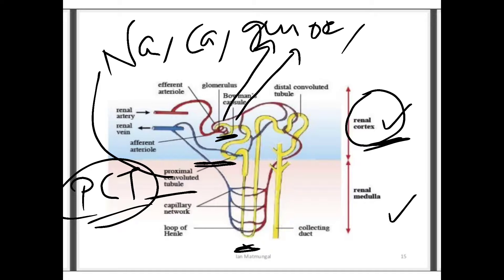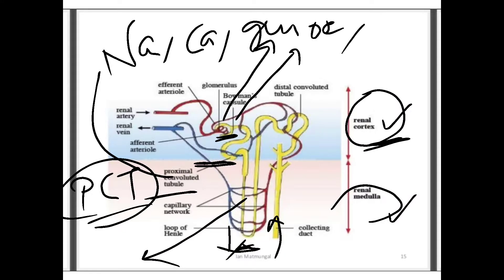The loop of Henle is found in the renal medulla and is formed of two limbs: a descending limb and an ascending limb. The thin-walled descending limb is permeable to water but impermeable to minerals like sodium chloride — so sodium chloride cannot pass through it, but water can. The ascending limb is impermeable to water but permeable to sodium chloride.